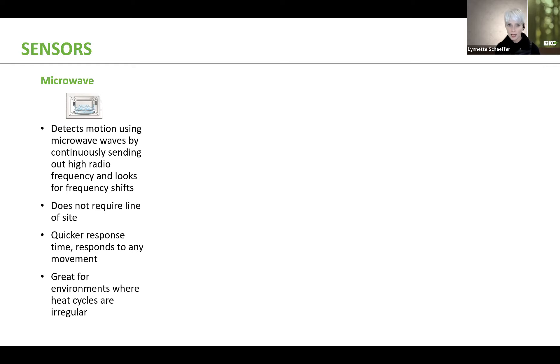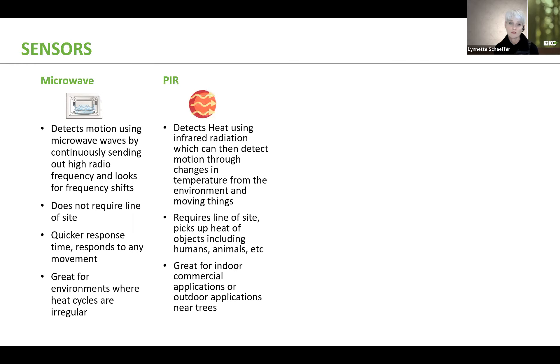Very much unlike PIR. PIR detects heat using infrared radiation, which can then detect motion through changes in temperature from the environment and moving things. This does require line of sight. So think of the matrix where you have red lines coming out of the sensor. If that red line is broken, then there's something going on and the sensor is going to react appropriately. Again, it requires line of sight. It picks up heat of objects, including humans and animals. It is really great for indoor commercial applications or outdoor applications near trees.